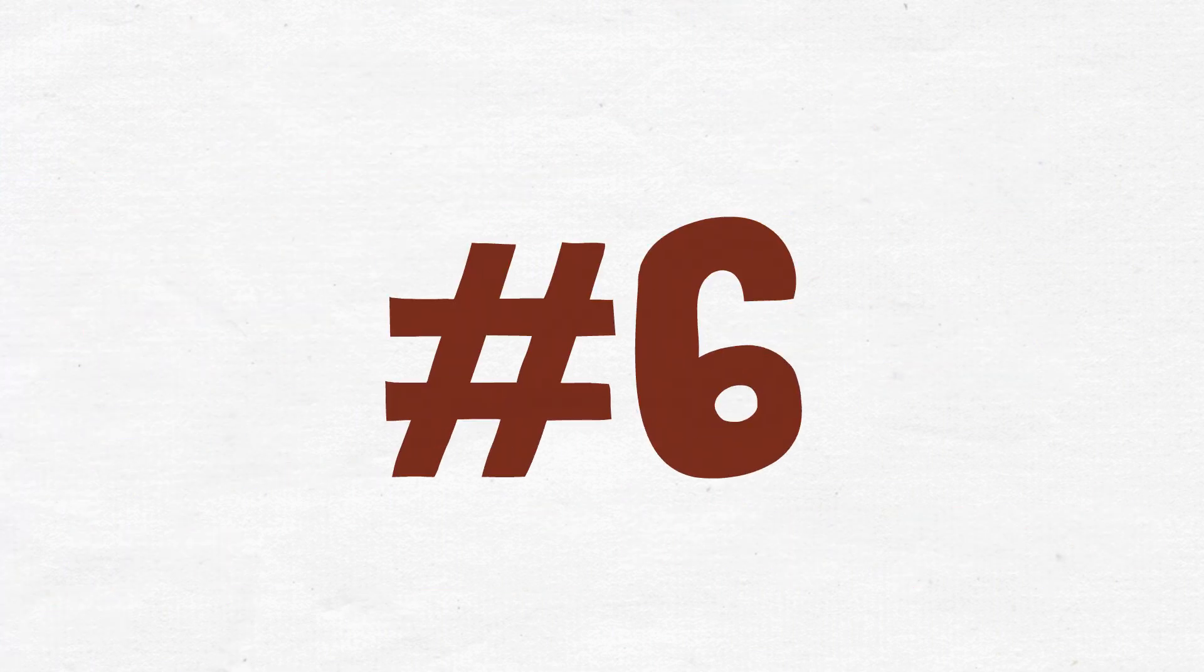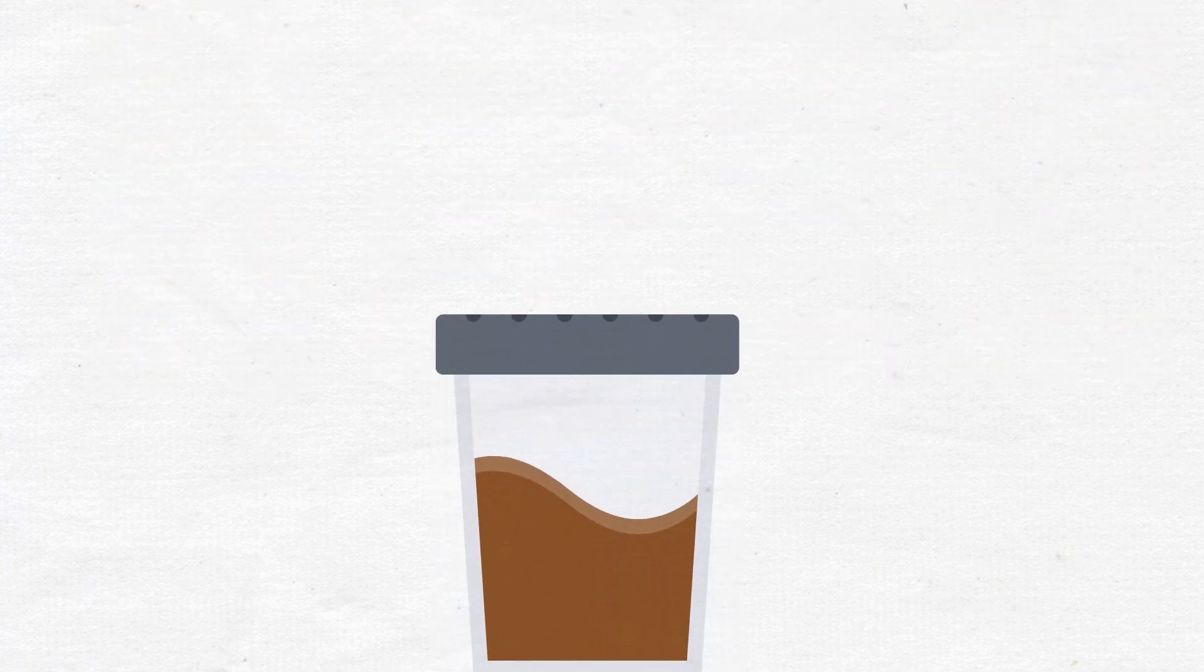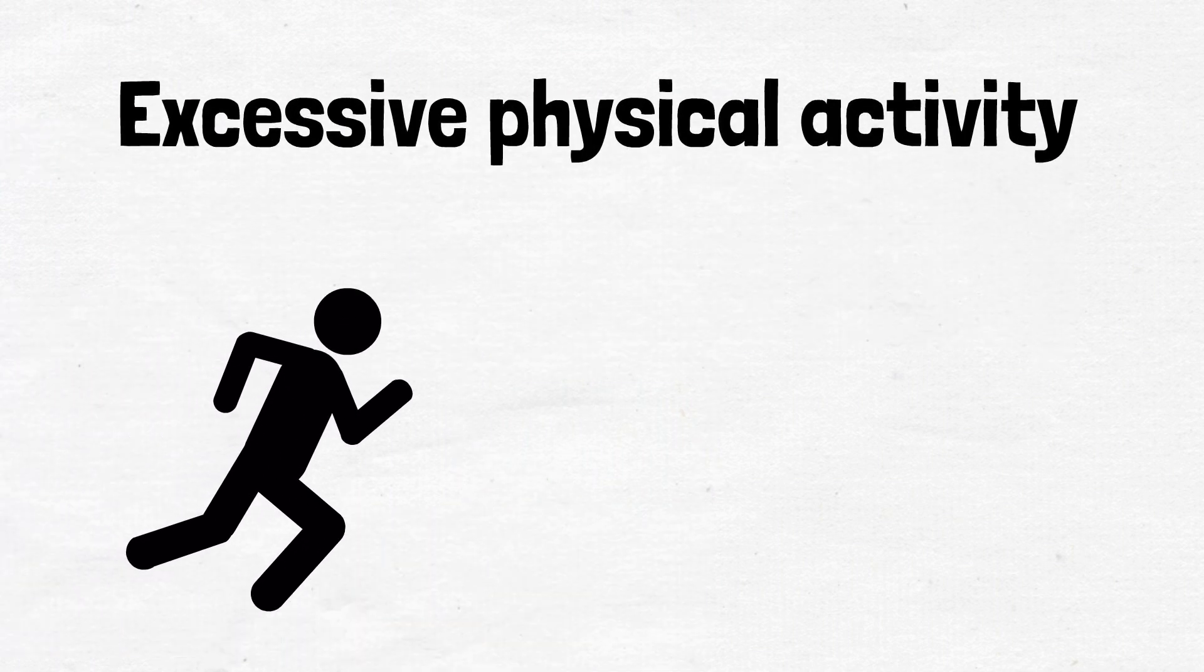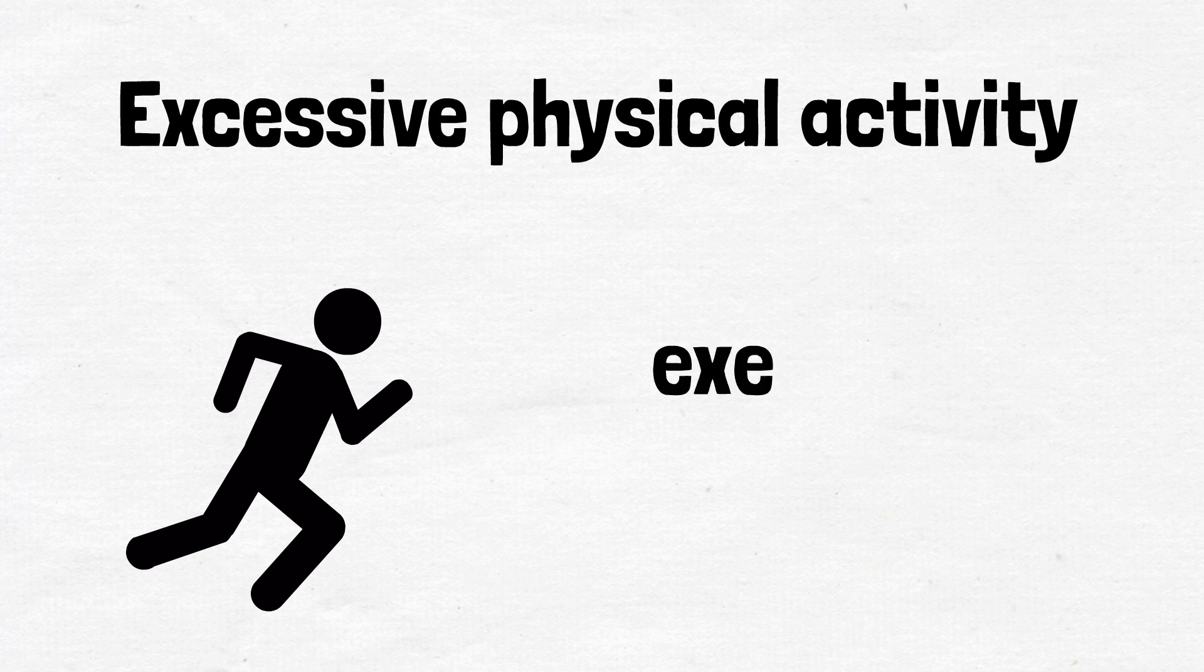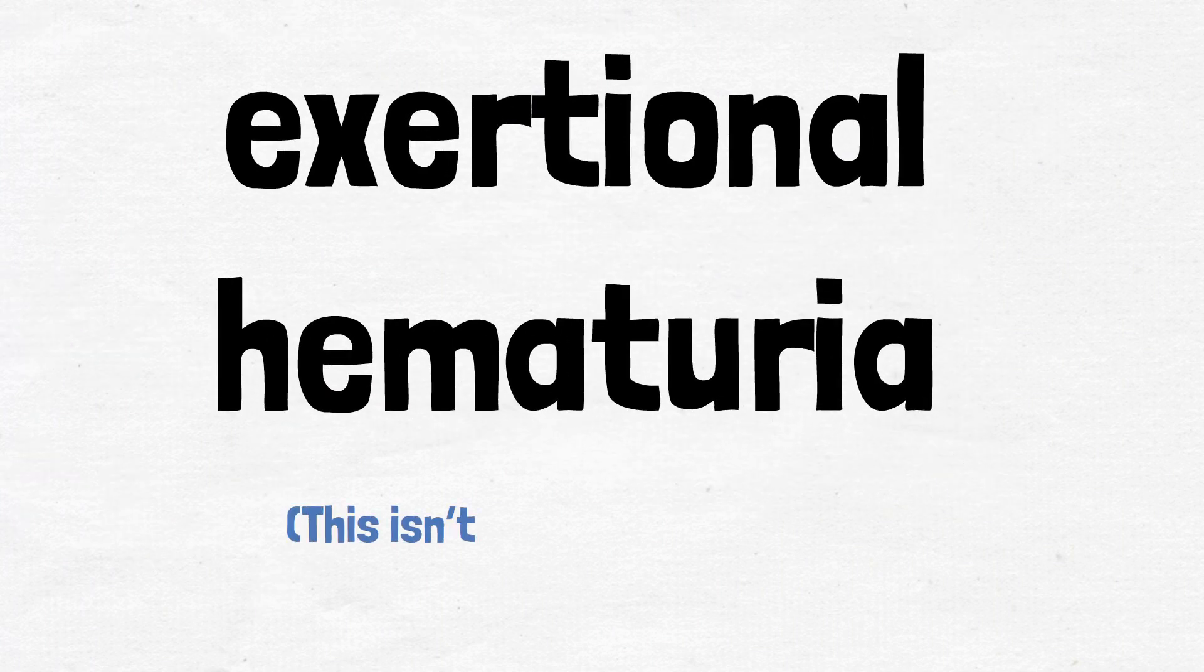Number six: dark brown urine. In most cases, urine that's dark brown indicates dehydration. Excessive physical activity, particularly running, can lead to dark brown urine, known as exertional hematuria. This isn't considered unusual.